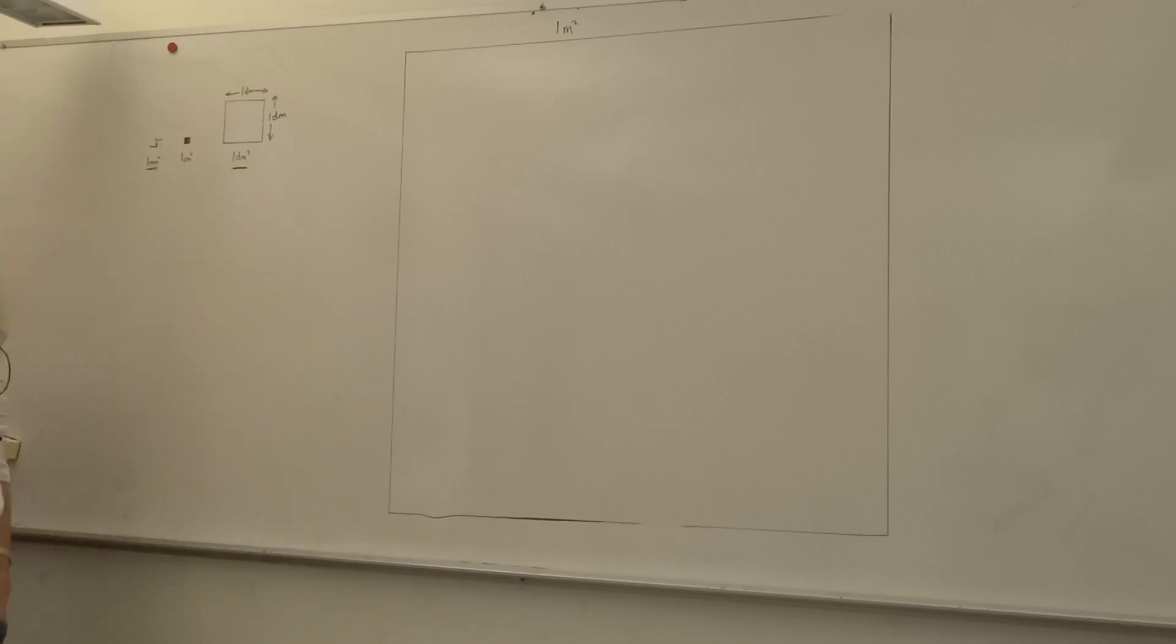Now the question is, how many of these little centimeter squares would we be able to fit in here? Well, we'd be able to fit 10 along the top here: one, two, three, four, five, six, seven, eight, nine, ten. If we split them up equally, then we'd have another row with another 10, and then another row with another 10. So if we were to calculate all of these centimeter squares that are in our decimeter squared, we'd actually get 100.